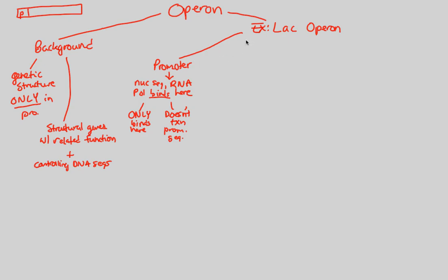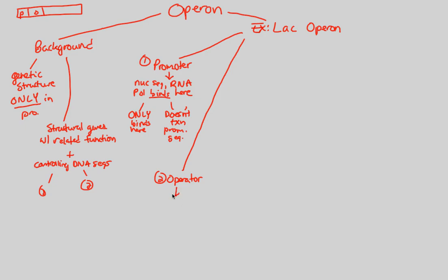Right next to the promoter is another controlling DNA sequence called the operator region. The operator is a nucleotide sequence near the promoter. Like the promoter, it is a controlling DNA sequence, and its purpose is what we'll discuss next.